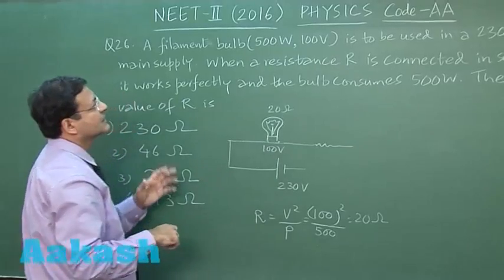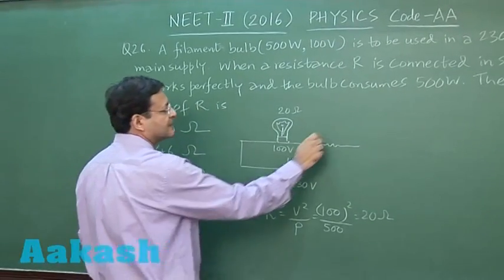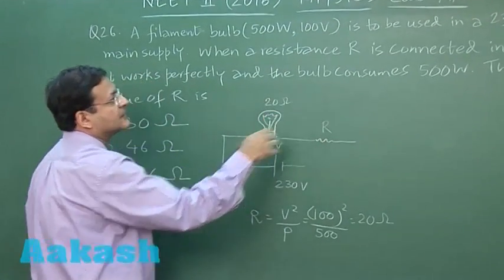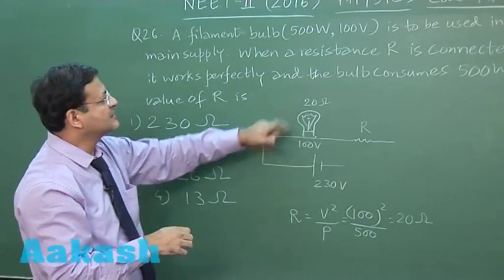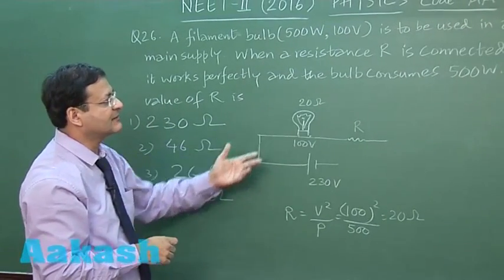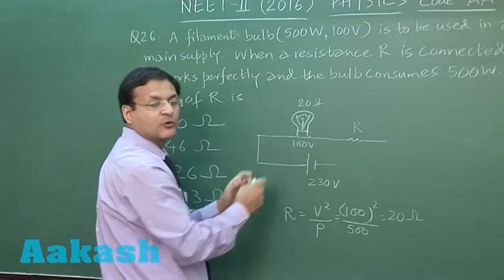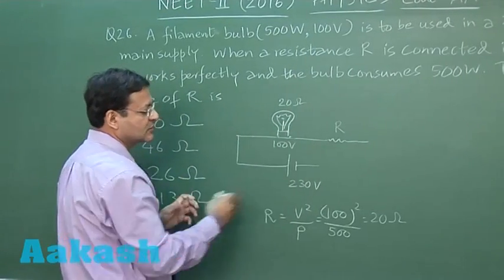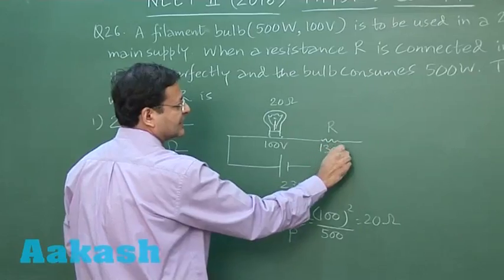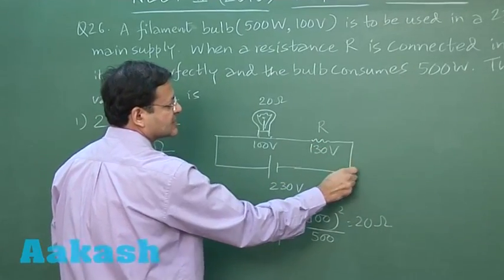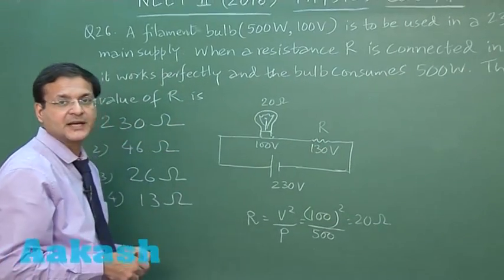In series they are saying resistance R is connected, and this bulb is working perfectly, consuming 500 watt. This is possible only if 100 volt is being consumed here, not more than that. The rest of the volt, 130 volt, will be consumed by this resistance R.